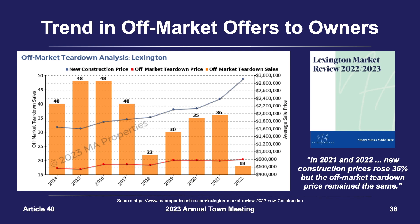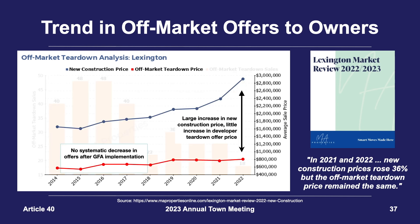A local real estate brokerage also tracks off-market direct-to-developer sales of teardown lots. Focusing on the red line — the average direct-to-developer sale price for teardown lots — and the blue line — the average sale price of new construction from off-market teardown lots — there are two findings of interest. First, from 2014 to 2018, there is no systematic decrease in average developer offers to property owners after 2016, consistent with the previous analysis. Second, in 2021 and 2022 the sale price of new construction rose 36%, but the off-market teardown price remained the same, suggesting that off-market offers for teardown lots are not keeping pace with the overall market price of new construction as they had in the past.